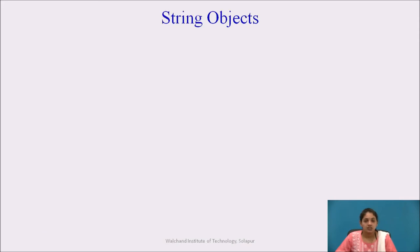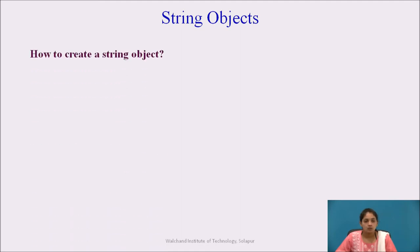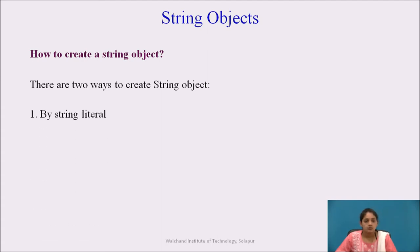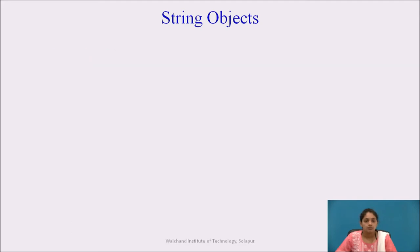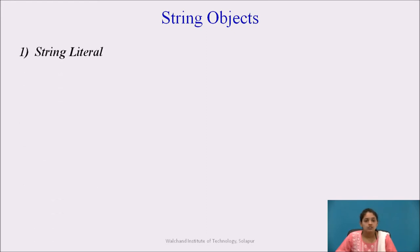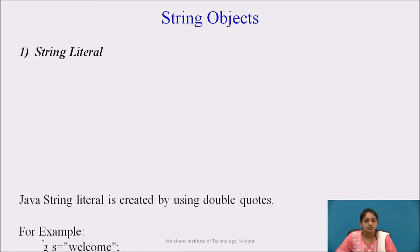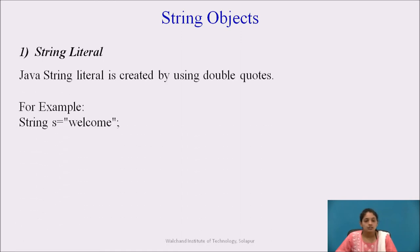Let us look at string objects. There are two ways to create a string object: first, by using the string literal method, and second, by using the new keyword. In the string literal method, a Java string literal is created using double quotes.